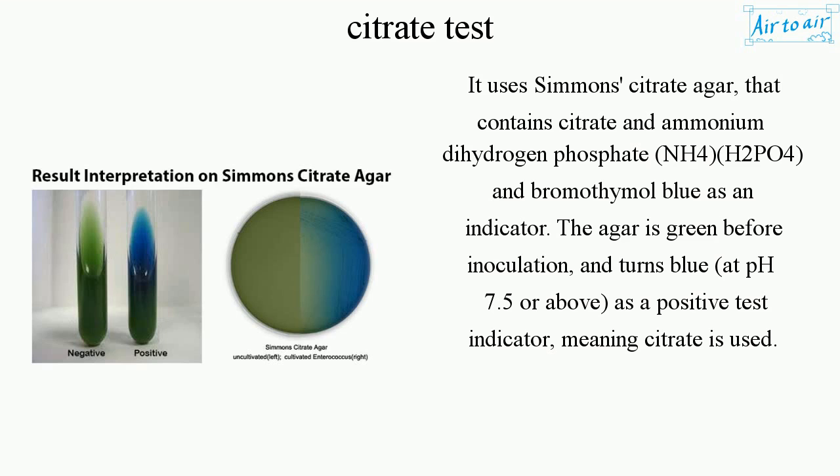The agar is green before inoculation and turns blue at pH 7.5 or above as a positive test indicator, meaning citrate is used.